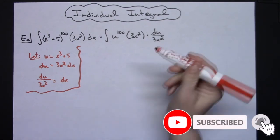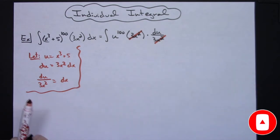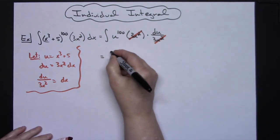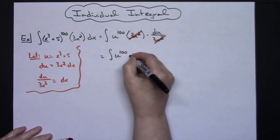Okay at that point hopefully you can see real easily that the 3x squareds are going to cross out and that's going to leave you then with just a straight integral of u raised to the 100 du.